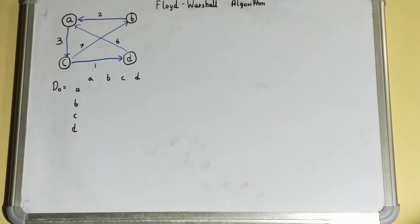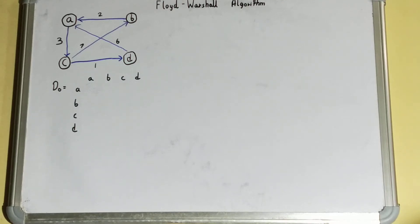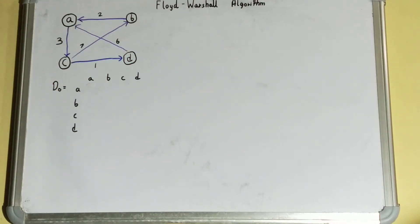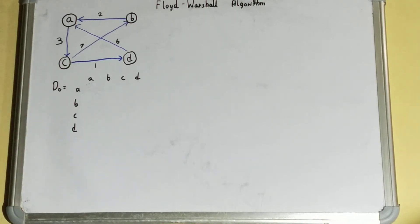Let's start. The first step is to find the D0 matrix. To find the D0 matrix, you need to count the number of vertices. In this case we have one, two, three, four — so four vertices. If you have four vertices, you make a four-by-four matrix. If you have five vertices you make a five-by-five matrix, and six vertices gives a six-by-six matrix. So in this case it's a four-by-four matrix.